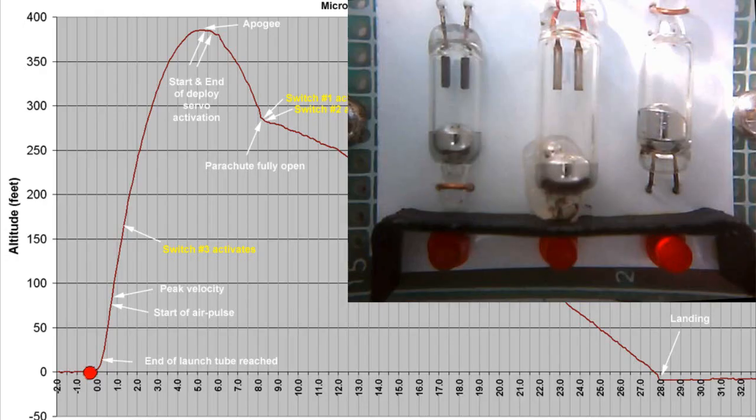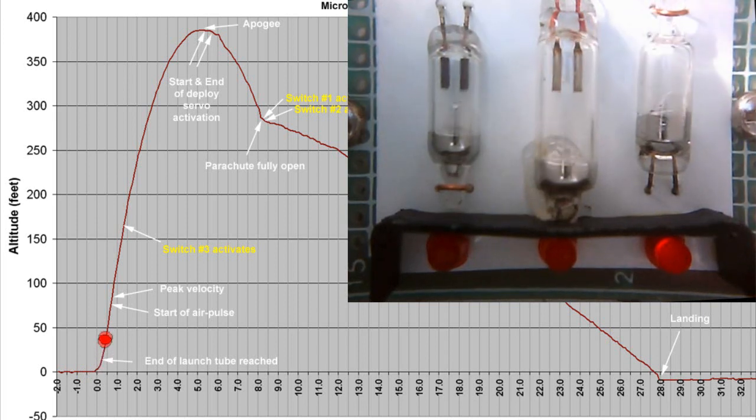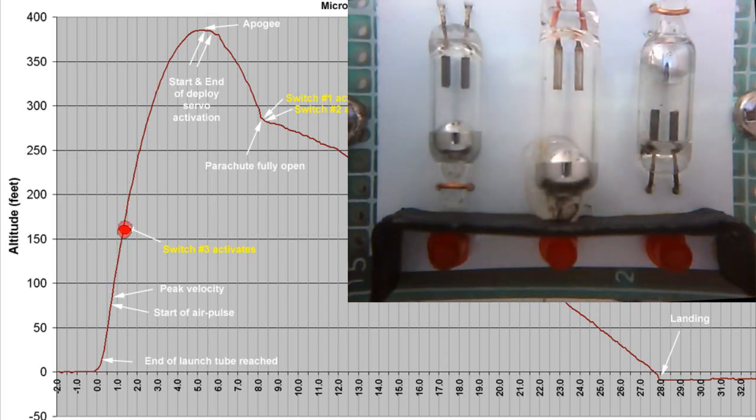And here it is in slow motion. So watch again as the rocket accelerates just past 150 feet. Switch number three activates again, we approach apogee.